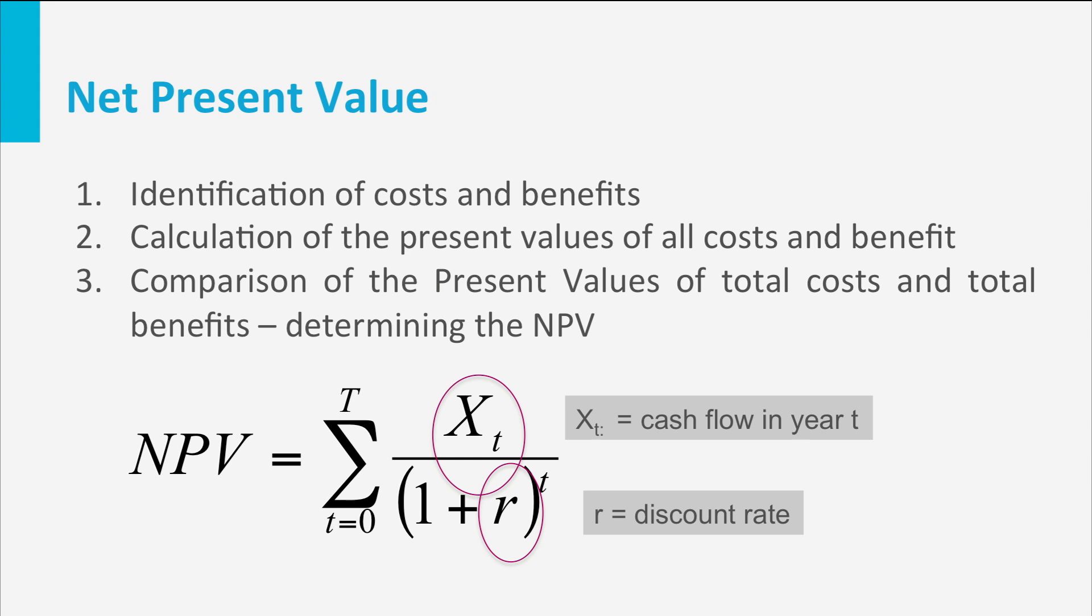An investment project is recommended when the total net present value of all cash flows is positive. The formula usually mentioned to calculate a net present value is the one you see now on the screen. Where Xt represents the cash flow in year t, capital T is the time period considered, usually expressed in years, and r is the discount rate.